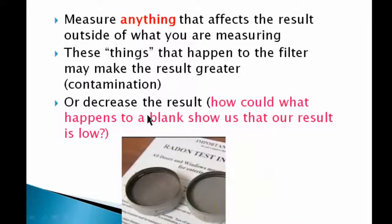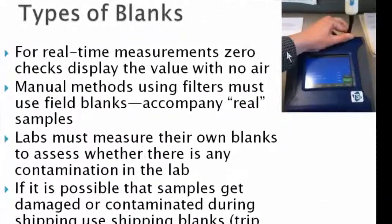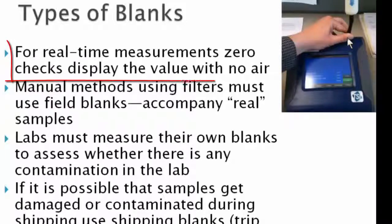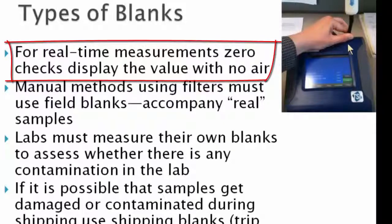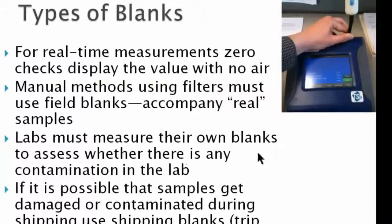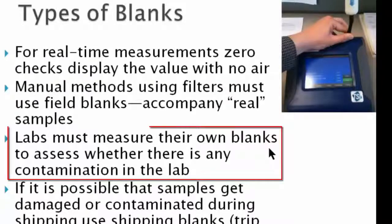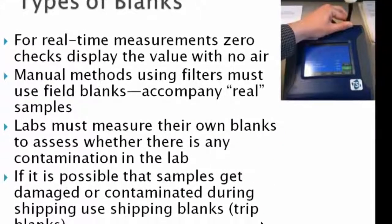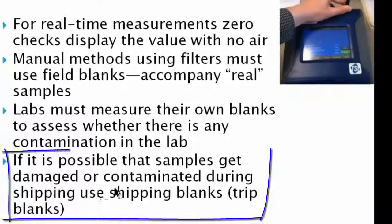Sometimes blanks are important to show us that our results are too high; sometimes they show us that our results are too low. If you're making real-time measurements — this is the DustTrak device — this is an excerpt from the SOP that the Seldovia Village Project generously provided. Their SOP is great because it's short and has little pictures with arrows. This is basically taking a blank, putting it up to the DustTrak inlet, and measuring what particulate matter is coming through — and it should be zero. Labs must use their own blanks; I think every tenth filter they weigh is a blank. Trip blanks are just for assessing whether anything got damaged or contaminated during shipping.